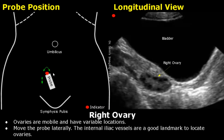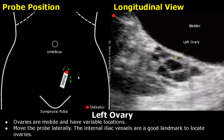First, we will see the right ovary. Move the probe laterally and slightly oblique to locate the right ovary. We will get this image showing the ovary in longitudinal view. In a similar way, move towards the left side to scan the left ovary in the longitudinal plane. This is the left ovary.